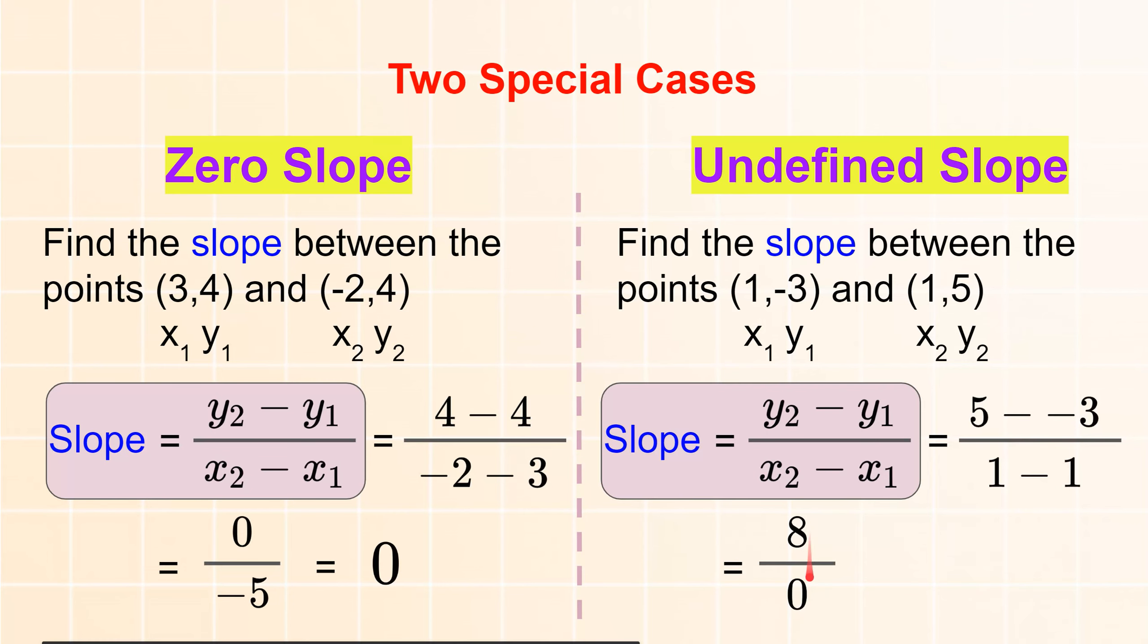And you cannot divide by 0. It's different than this case. 0 divided by any number is 0. But a number divided by 0 is infinity or undefined. So in this case, you will get a slope that is undefined.